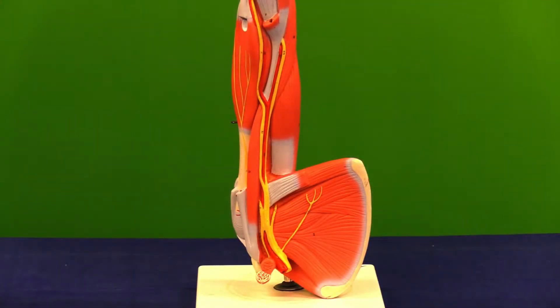Now, we are going to look at the circulatory system and blood vessels of the upper extremity. Particularly, we're going to look at arteries.